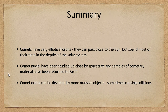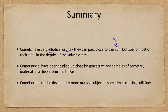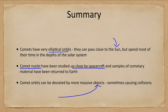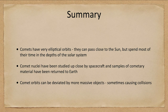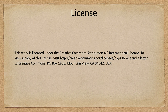To summarize: comets have very elliptical orbits, passing close to the sun but spending most of their time in the depths of the solar system. The nuclei of comets have now been studied up close by spacecraft, and we have samples of cometary material returned to Earth. Comet orbits can be deviated by more massive objects — including the sun and planets — sometimes causing collisions that release immense amounts of energy. That concludes this lecture on comets; we'll be back next time for another topic in astronomy.